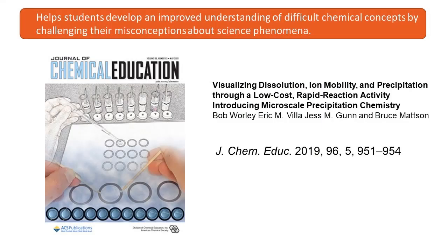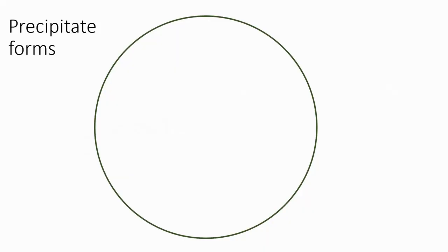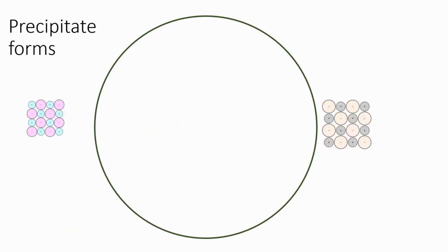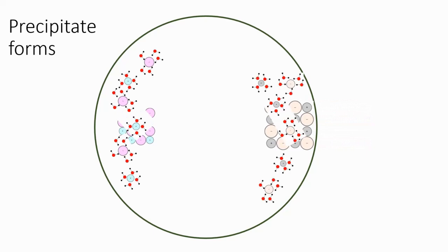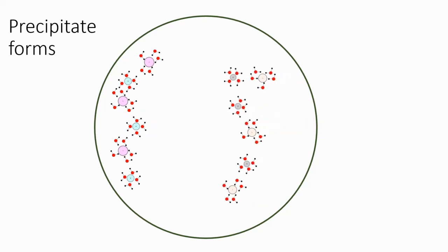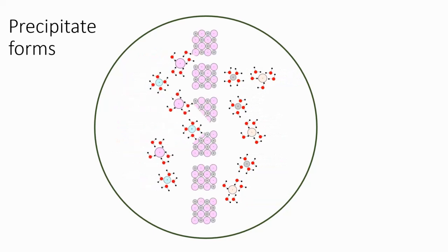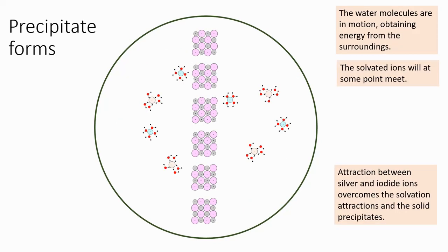The solvated ions are now moving and as they move towards the middle so the precipitate forms. Bruce Mattson saw this reaction and thought his first year university students could benefit by it. So we did it and were really impressed, and we published this in the Journal of Chemical Education in May 2019, and we were surprised and honoured to see that we reached the front page as well. Here is a little model I made using PowerPoint. The two solids will be outside the circle — the circle represents the puddle. The solids will dissolve and form solvated ions. The ions will then diffuse in the water and as they come together so the precipitate will form.